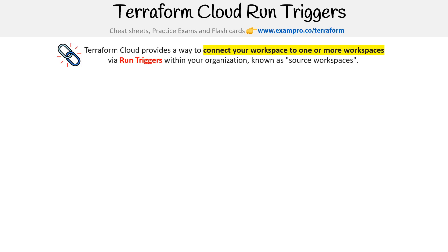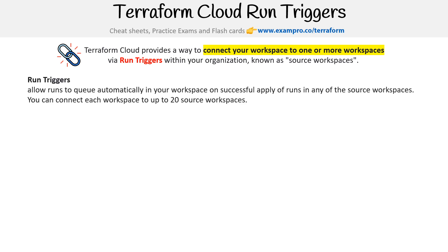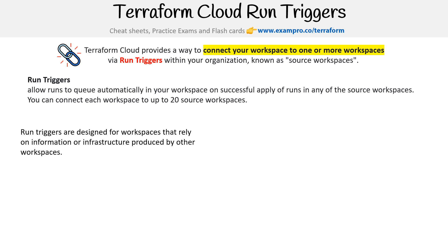Let's talk about Terraform Cloud run triggers. Terraform Cloud provides a way to connect your workspaces to one or more workspaces via run triggers within your organization, known as source workspaces. Run triggers allow runs to queue automatically in your workspace on successful apply of runs in any of your source workspaces, and you can connect each workspace to up to 20 source workspaces. Run triggers are designed for workspaces that rely on information or infrastructure produced by other workspaces.